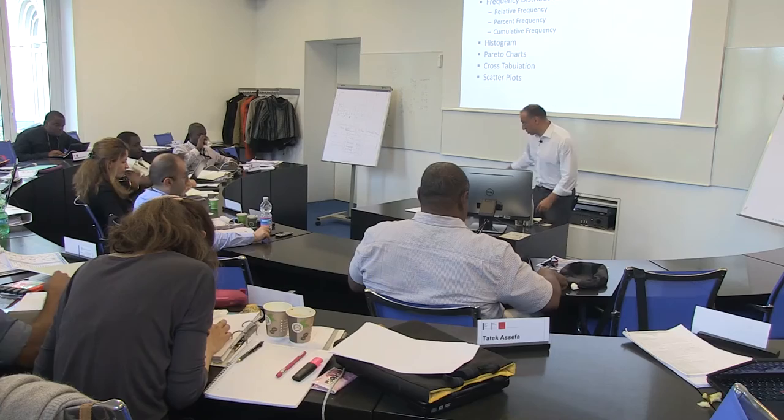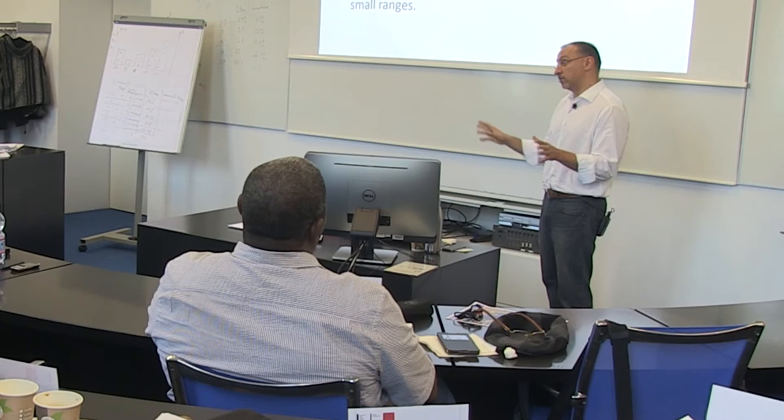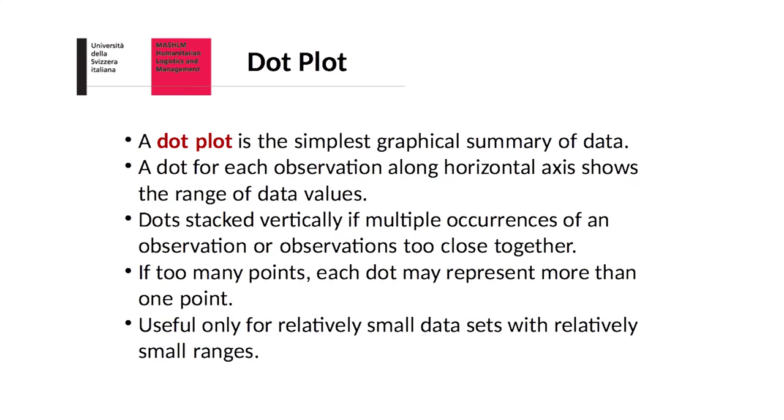All right, so we're going to show you some graphical methods for quantitative data. Now, a dot plot is really a simple chart. It's a plot full of dots and it can be that you have a dot for each observation or you can have a dot for two, four, five observations, something like that. It's useful for relatively small data sets, small ranges as well.